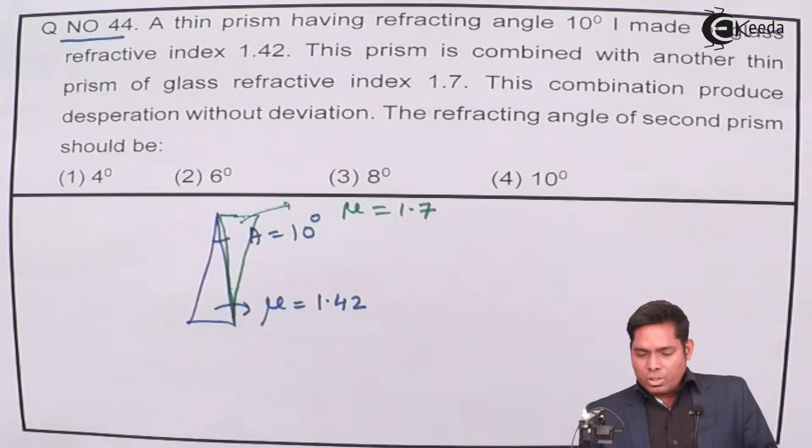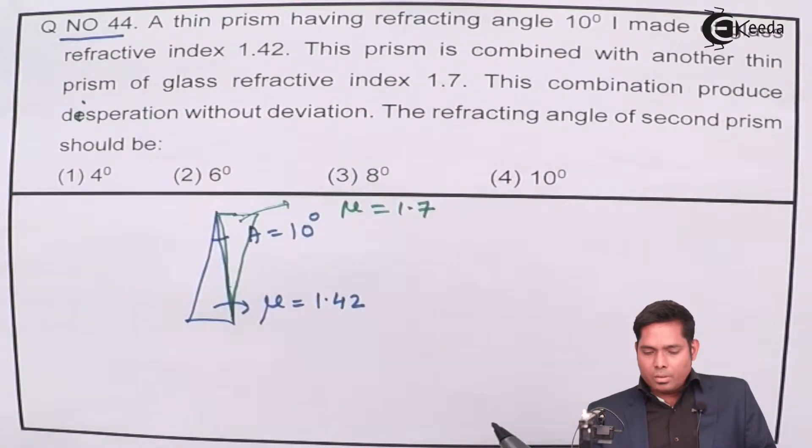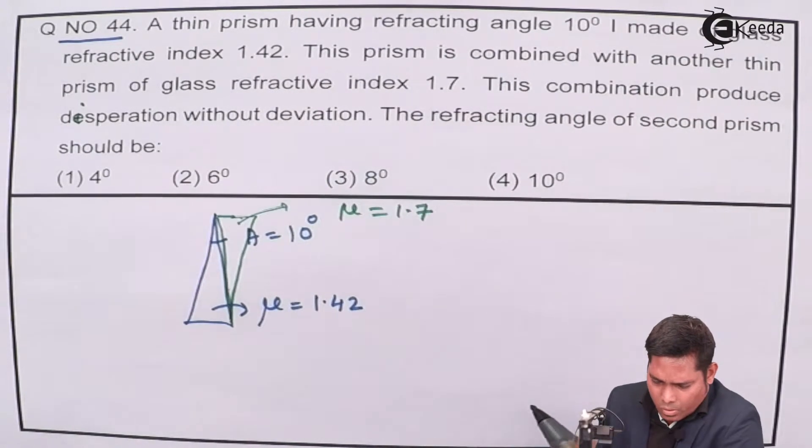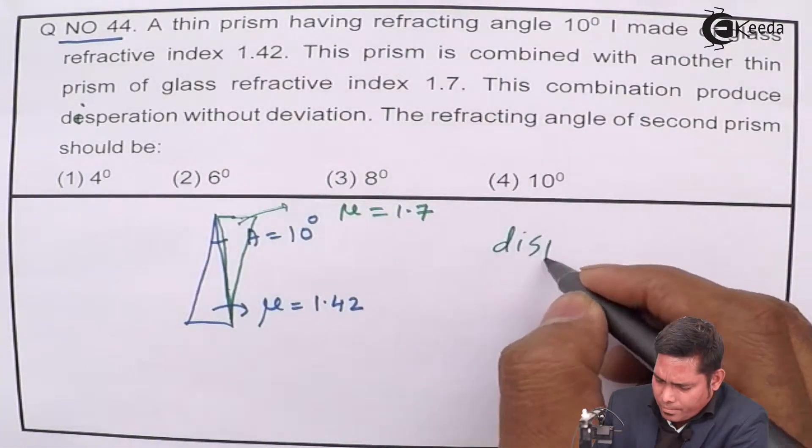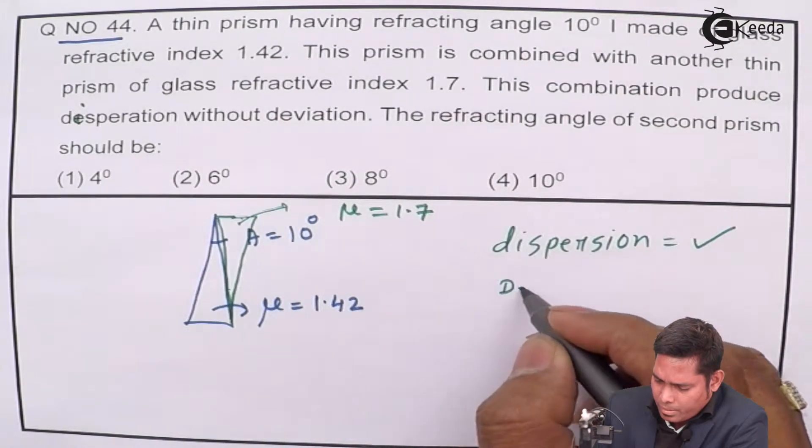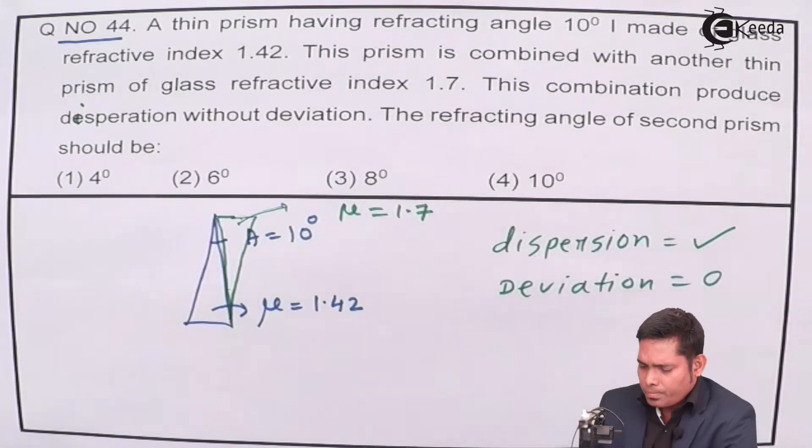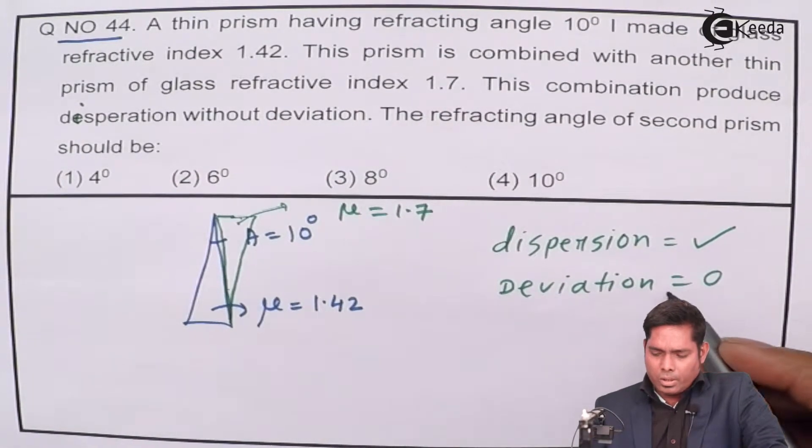This combination produces dispersion without deviation. No deviation means dispersion will be there but deviation is zero. Dispersion is not zero, but deviation is zero, where deviation angle is delta.